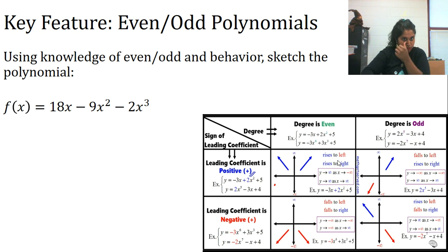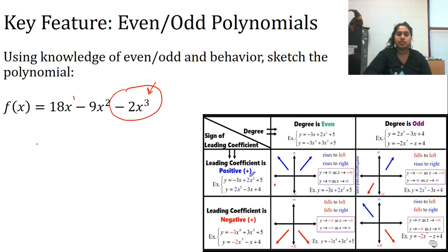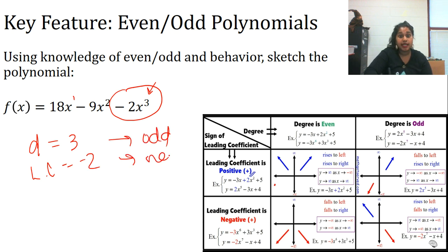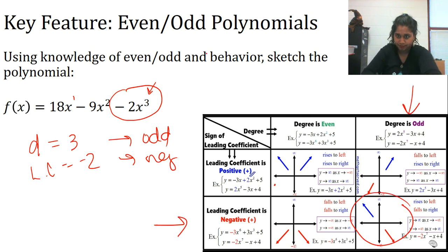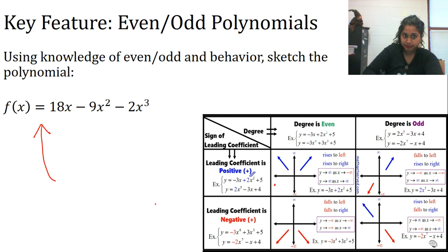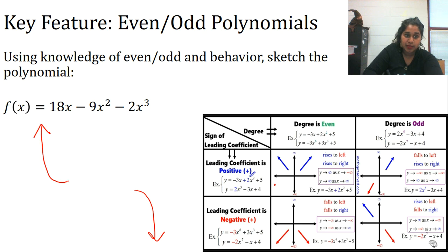The first thing is to look for the largest degree. This polynomial has degree 3 and leading coefficient -2, making it odd and negative. So my graph should come from up and go down. Because it's a cubic — and it has some expansions — it probably has some humps in the middle.